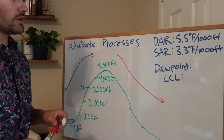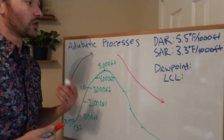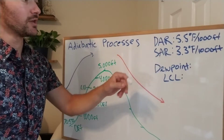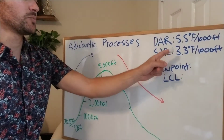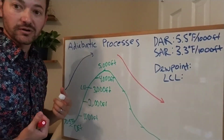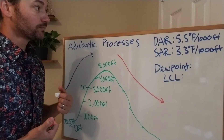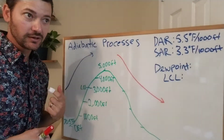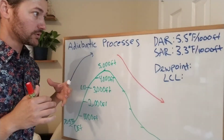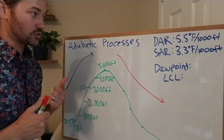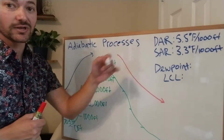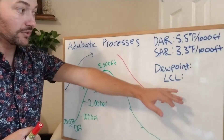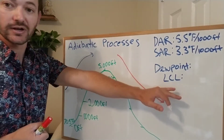If air is saturated — meaning it's at 100% relative humidity — then we use the saturated adiabatic rate, which is 3.3 degrees Fahrenheit per thousand feet. If you look at a mountain and there are clouds around the top, that is saturated air — that's the saturated adiabatic level.